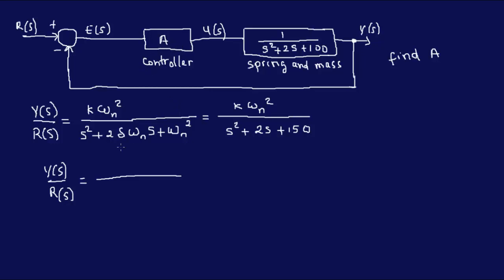And typically then g(s) would be A times that. So I have A over s squared plus 2s plus 100 over 1 plus A over s squared plus 2s plus 100.